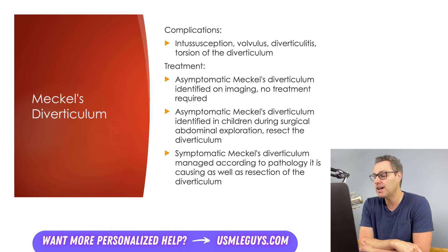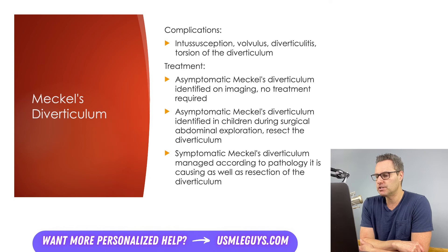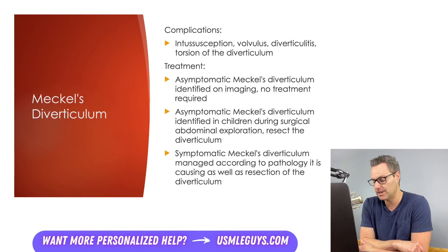Treatment for Meckel's diverticulum depends on how the diverticulum is discovered and whether symptoms are present. For asymptomatic cases identified on imaging, no treatment is needed. If an asymptomatic Meckel's is identified in children during surgical abdominal exploration, surgical resection is recommended. For symptomatic cases, management follows the presenting pathology — for bleeding, give proton pump inhibitors, fluids, and transfusions as needed; for obstruction, place an NG tube and decompress the stomach. All symptomatic cases should ultimately be treated with resection.